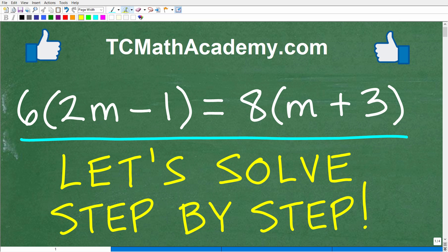And just to be clear here, the problem is six times two M minus one, and this is equal to eight times M plus three.